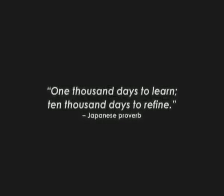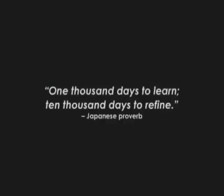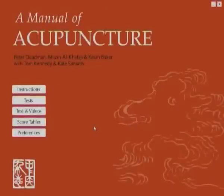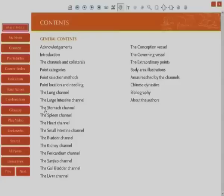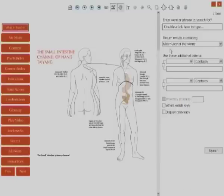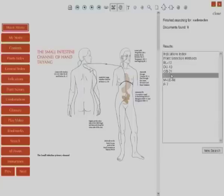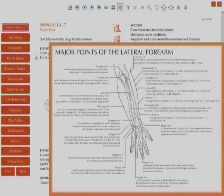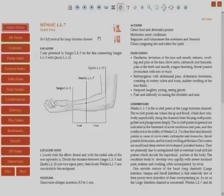A Manual of Acupuncture Multimedia DVD-ROM is the exciting new tool for acupuncture students and practitioners alike, packed with innovative features that will help you improve your knowledge. You can view and search the entire contents of A Manual of Acupuncture, view pop-up body area illustrations, and hear Chinese pronunciations of the point names.